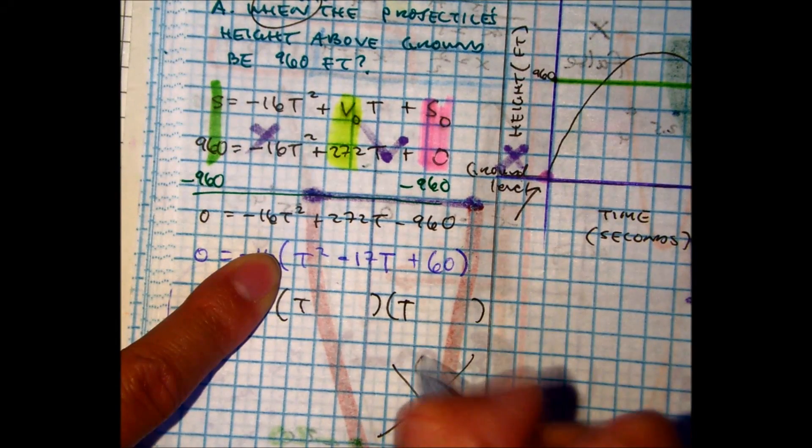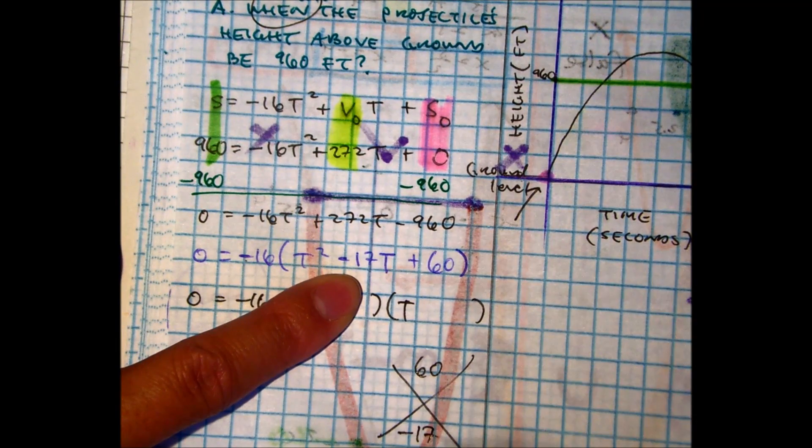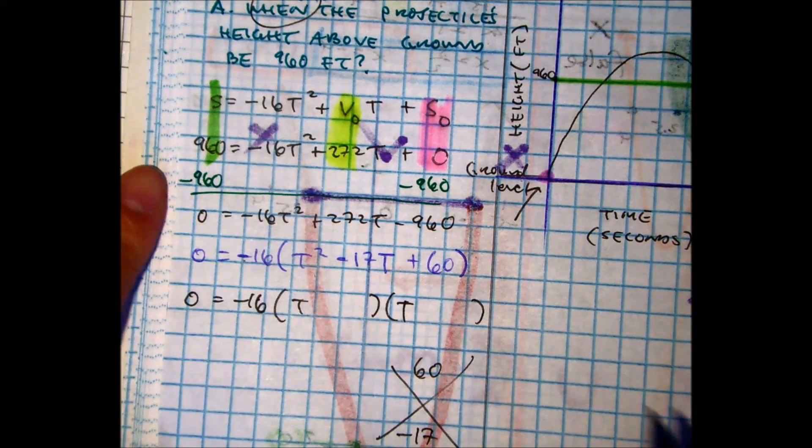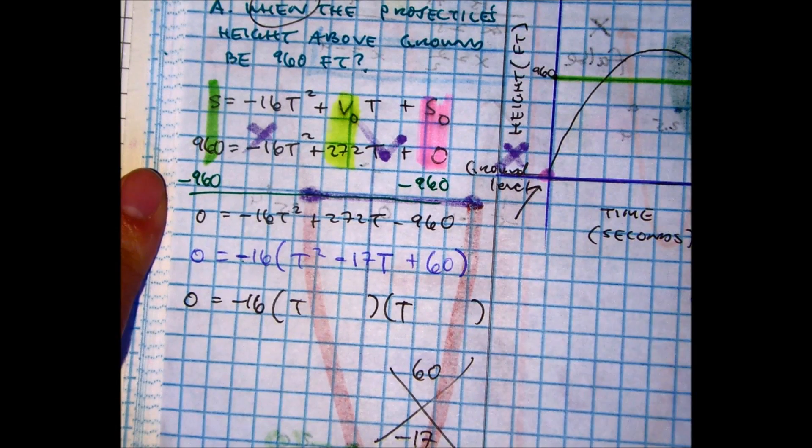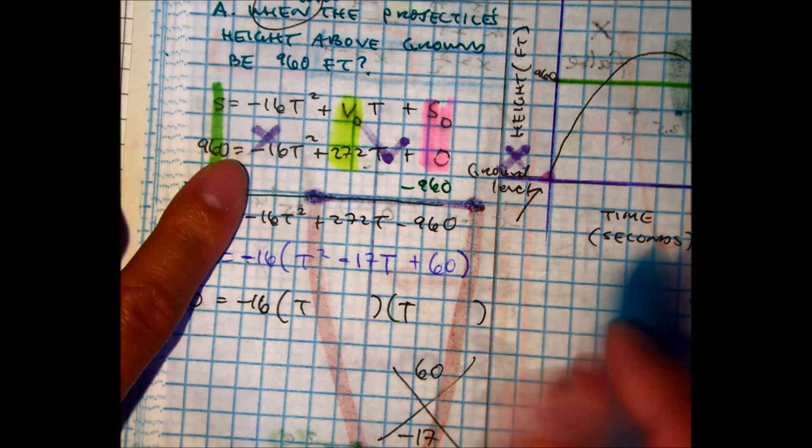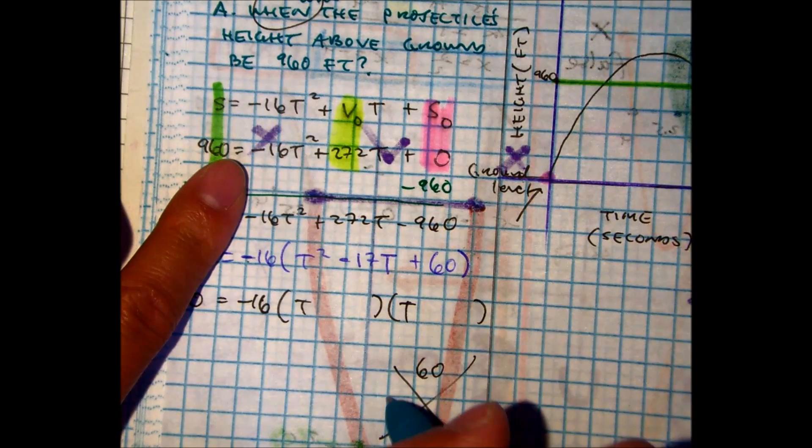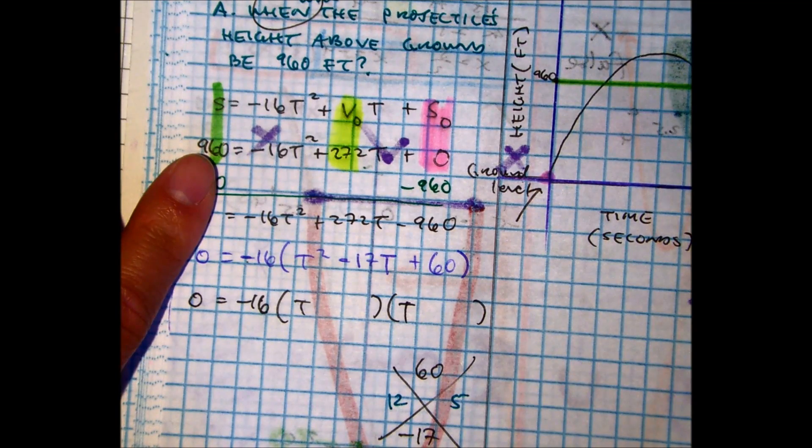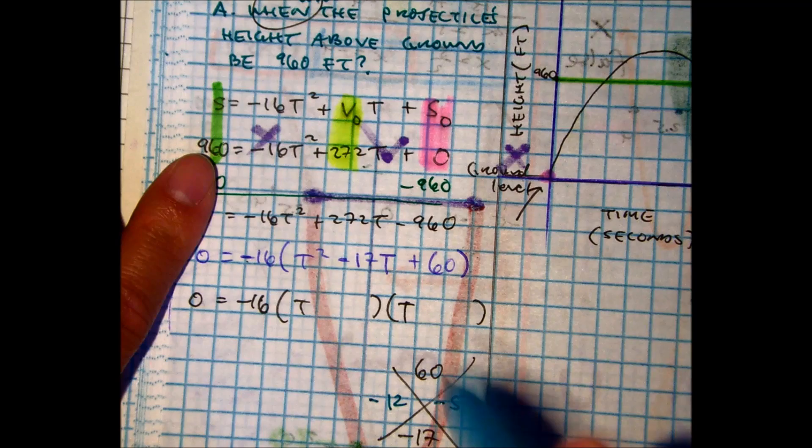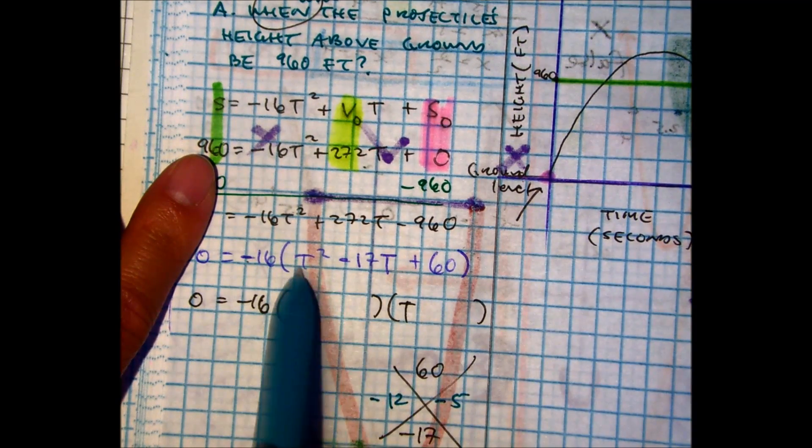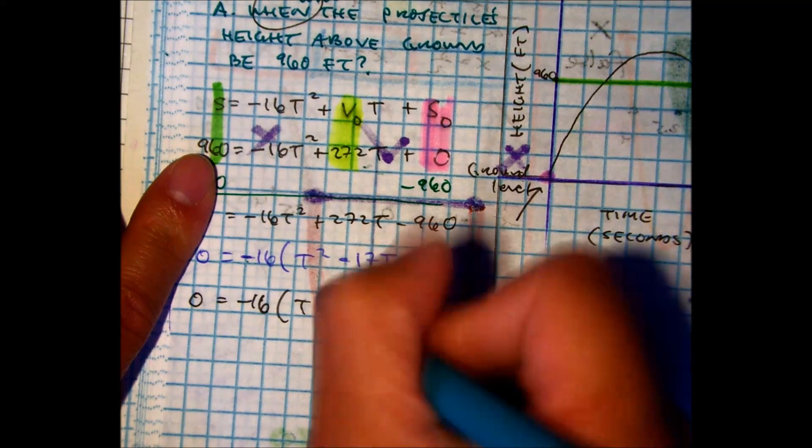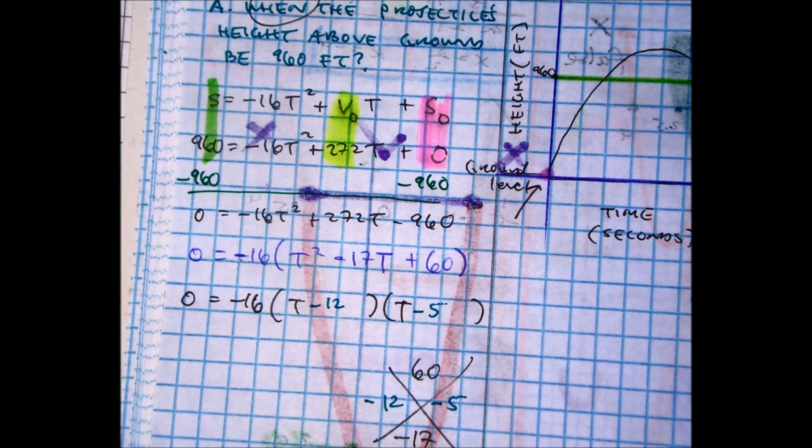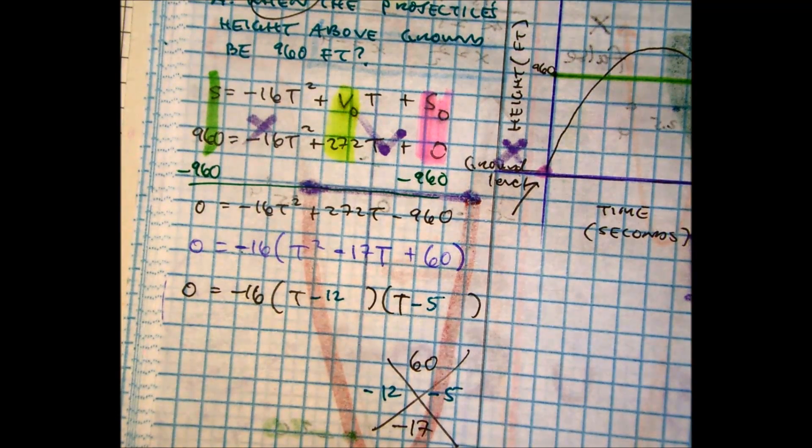So A times C is 60. B value is negative 17. Two numbers that multiply to be 60 but add to be 17. What are they? 12 and 5. And what do I have to do to this? Negative. So because my A value is equal to 1, I only have to use the X. Minus 12, minus 5.